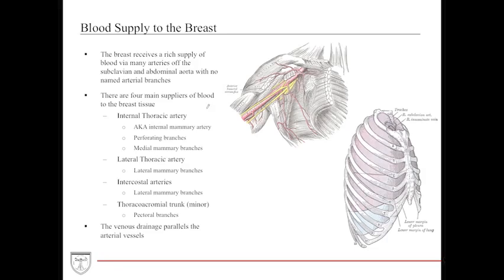The blood supply to the breast is very dense and rich, supplied by many different structures. Most notably, blood comes off the subclavian artery as well as the aorta. The subclavian artery provides blood via the internal thoracic or internal mammary artery, with numerous perforating branches that go laterally into each breast, supplying the majority of blood to the medial portion of the breast. The lateral thoracic artery provides blood to the lateral breast tissue.